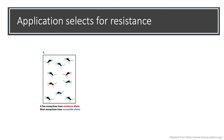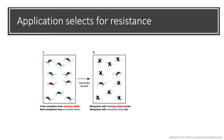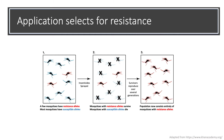Application of insecticides selects for resistance in a population. When an insecticide is first used, most individuals carry susceptible alleles. These individuals are killed, which leaves the resistant survivors to reproduce. Over many generations of survivors reproducing, the population consists of all individuals with resistance alleles.